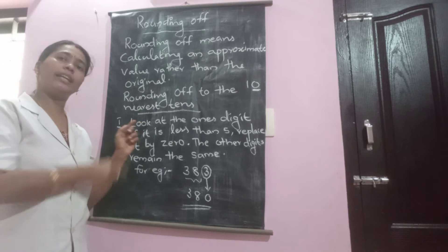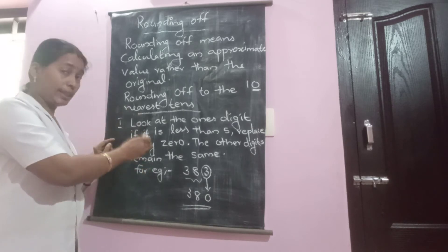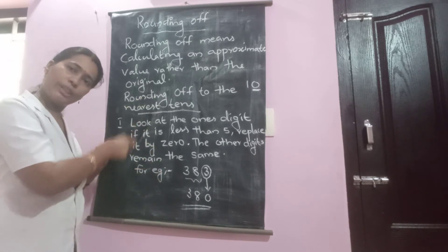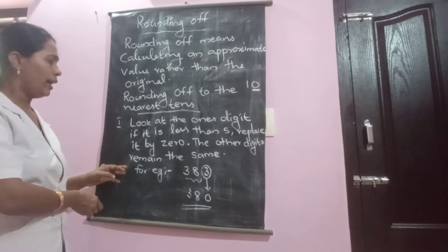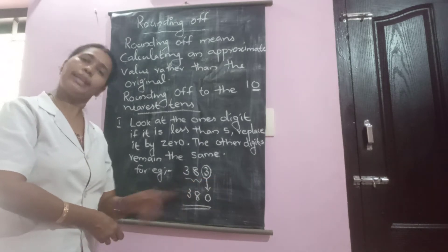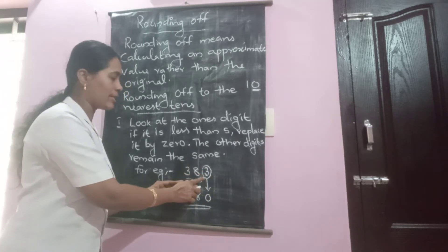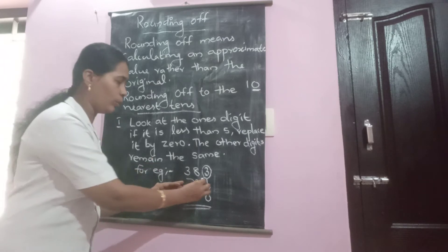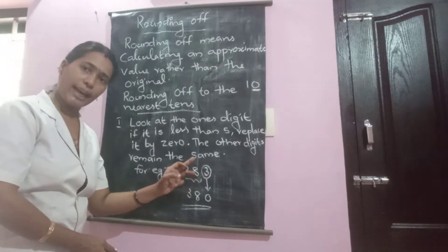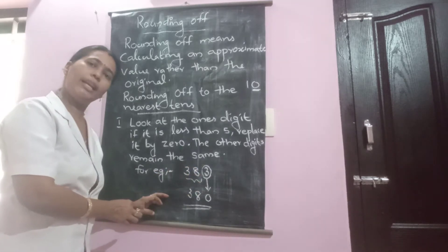Round off the one's digit and replace it by zero. If the one's digit is less than five, the remaining digits do not have any change — bring them down without change. For example, let us consider the number 383. We are going to convert this to nearest tens. First, circle the one's digit. Once circled, replace it by zero. Since three is less than five, there is no change to eight.